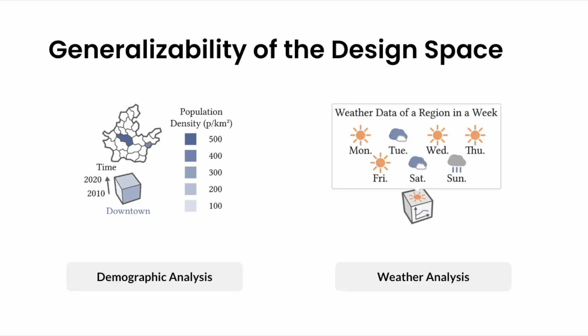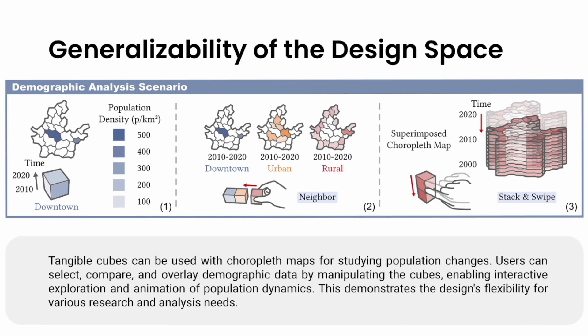Finally, to demonstrate the generalizability of the design space into different data contexts, we propose two additional data scenarios, namely demographic and weather data analysis. In the demographic analysis scenario, tangible cubes visualize population density changes over time, allowing users to compare regions or time periods and animate changes through interaction. In this case, each cube represents the population of a specific region over a period of time. In this example, we highlight how our design space extends beyond the initial prototype and can accommodate different spatial temporal scenarios. And the interactions are not confined to one type of visual representation, such as bar charts. It readily adapts to thematic maps and other visual forms. Designers have the freedom to select visual forms that best suit their research and analytical objectives.